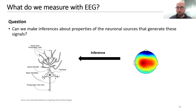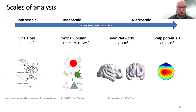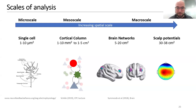With DCM, the question is: can we make inferences about properties of the neuronal source that generated these signals? The way to get there is to first specify a forward model — a set of rules describing how changes in neurons translate to measured scalp activity. This is challenging because we traverse many spatial scales: from a single cell (microns) to a cortical column (populations of neurons) to a brain network to whole-brain scale potentials. We need to define every step of this transition, starting at the mesoscale.